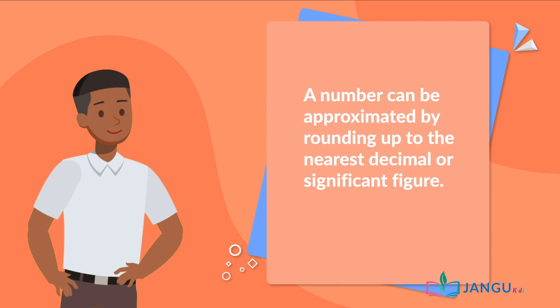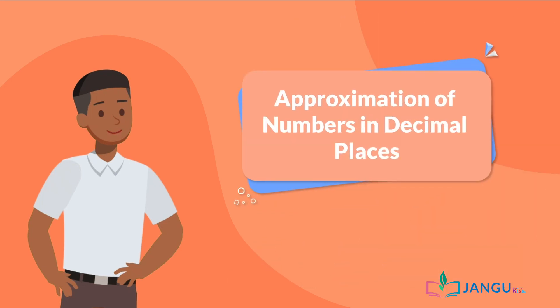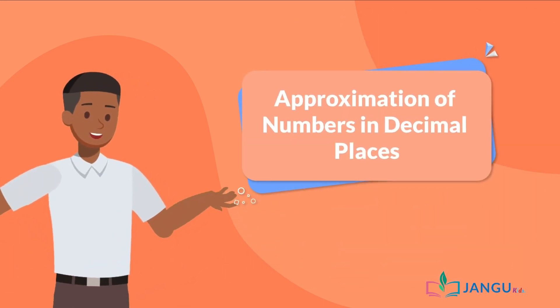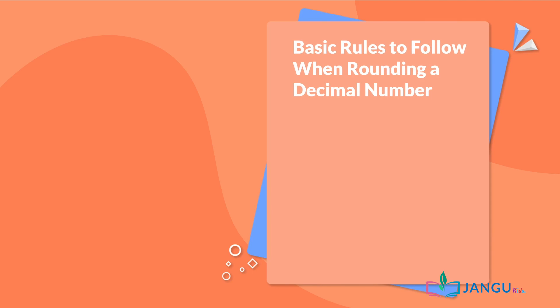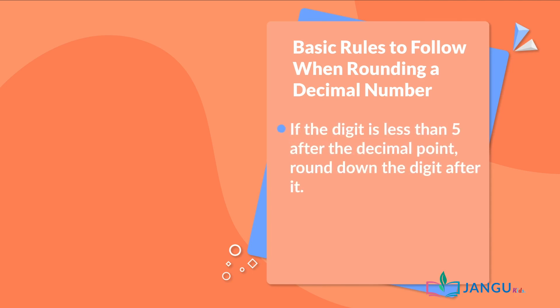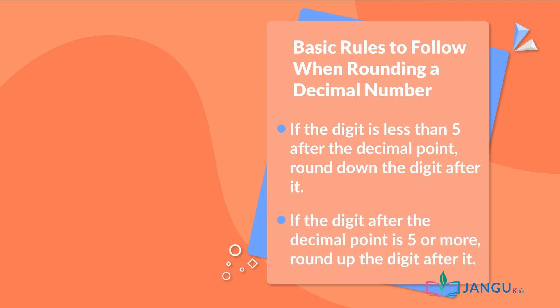A number can be approximated by rounding up to the nearest decimal or significant figure. We can round decimals to the nearest whole number, tenths, or hundredths when having exact values isn't important. There are two basic rules to follow when rounding a decimal number: 1. If the digit after the decimal point is less than 5, round down the digit after it. 2. If the digit after the decimal point is 5 or more, round up the digit after it.